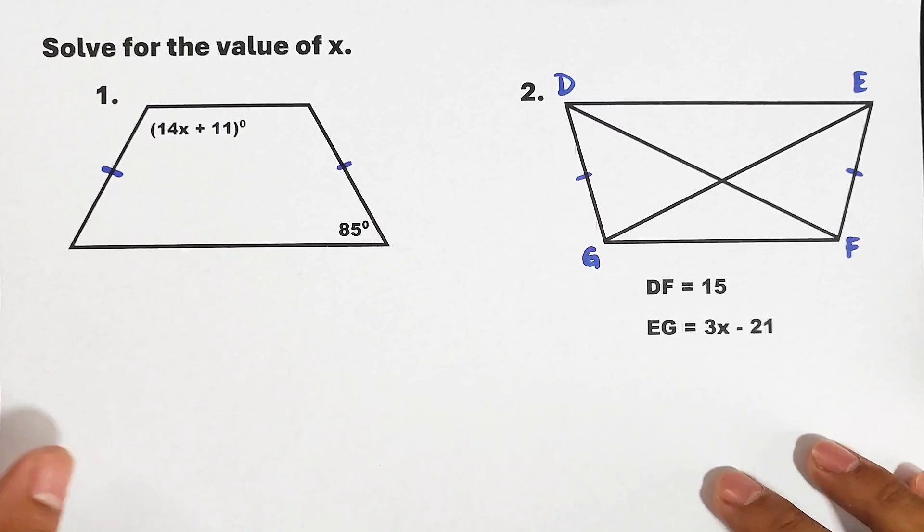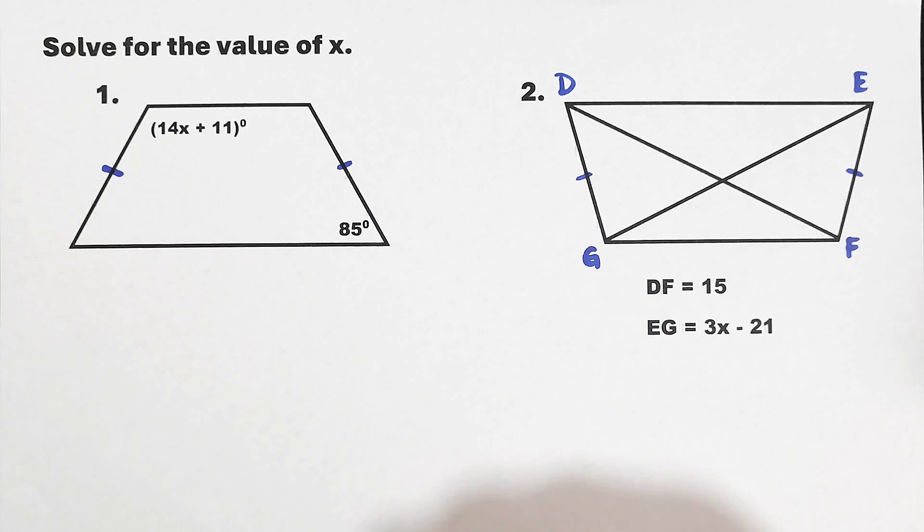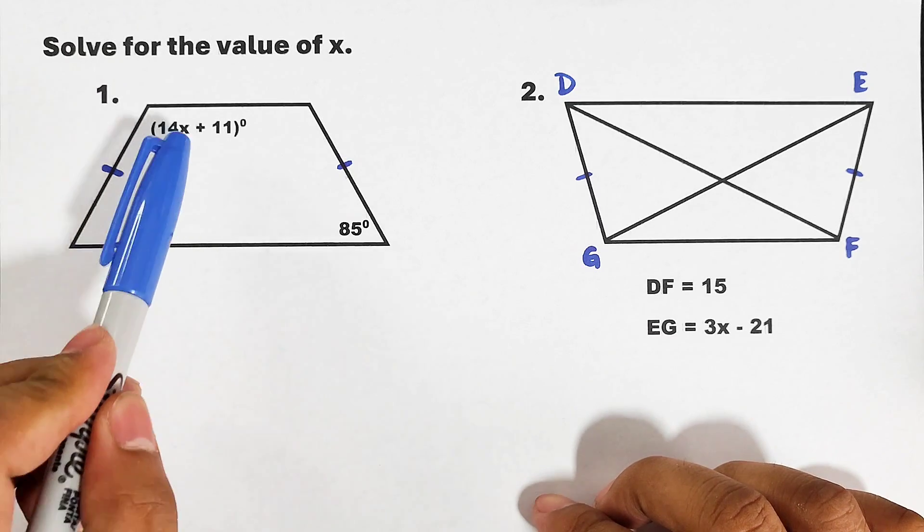As you can see, number one and number two are all isosceles trapezoids. So how are we going to solve for the value of x given this problem?